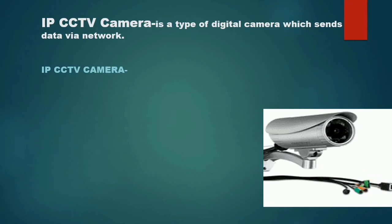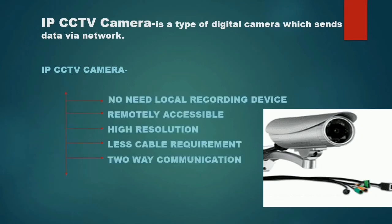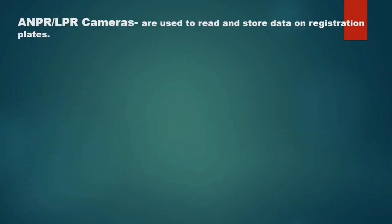Some of the major features of the IP camera are: there is no need for a local recording device, it is remotely accessible — you can access it from anywhere — it has high resolution, fewer cables are used, and it supports two-way communication. You can access the feeds from home or from anywhere.